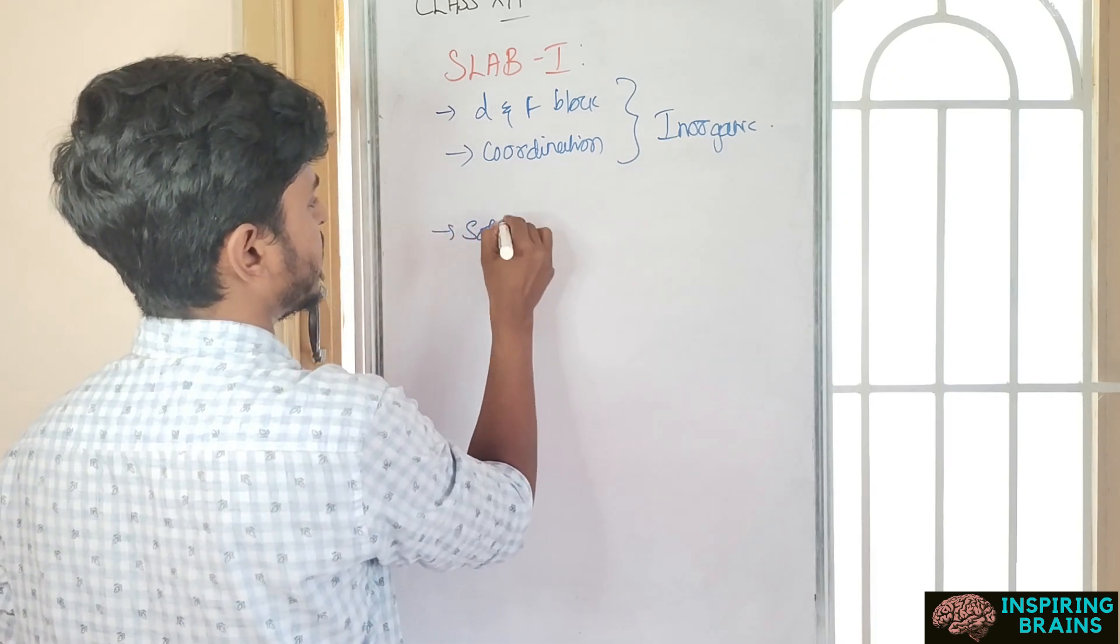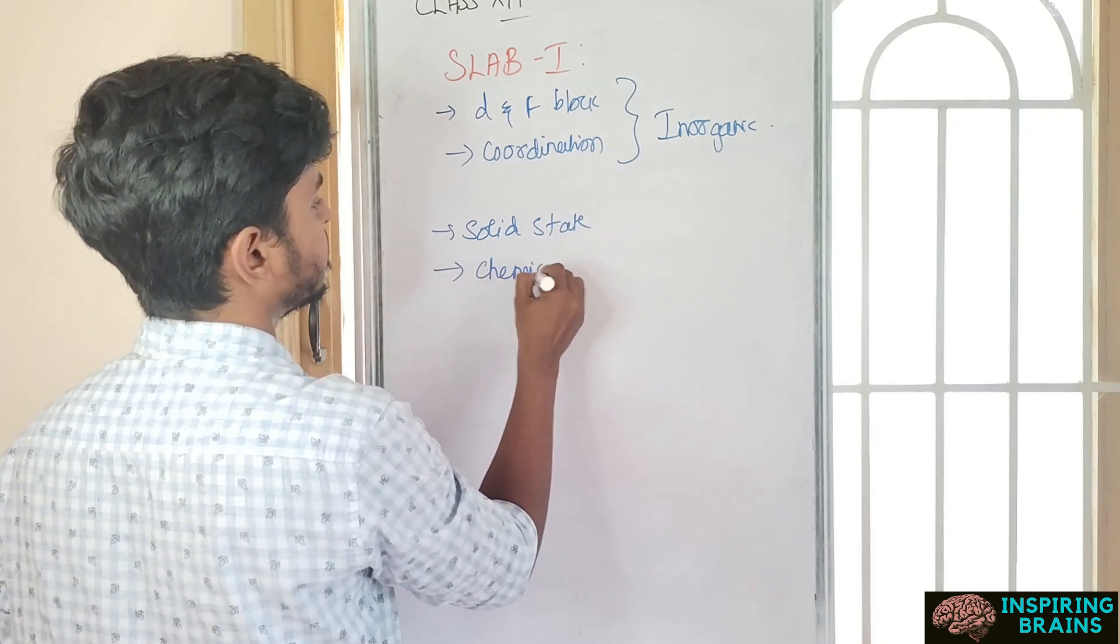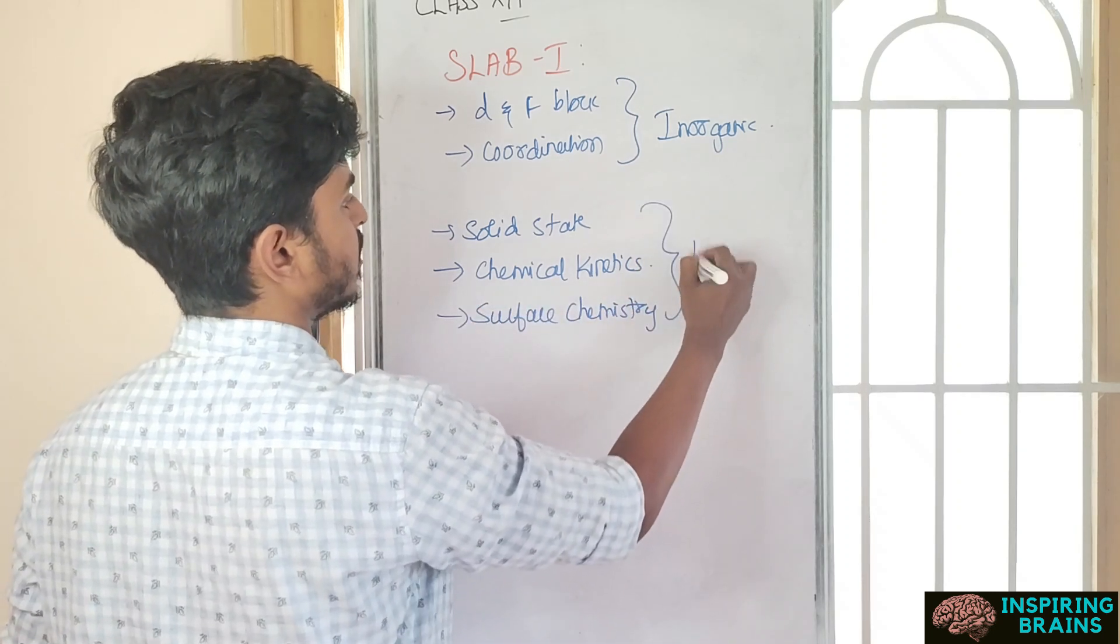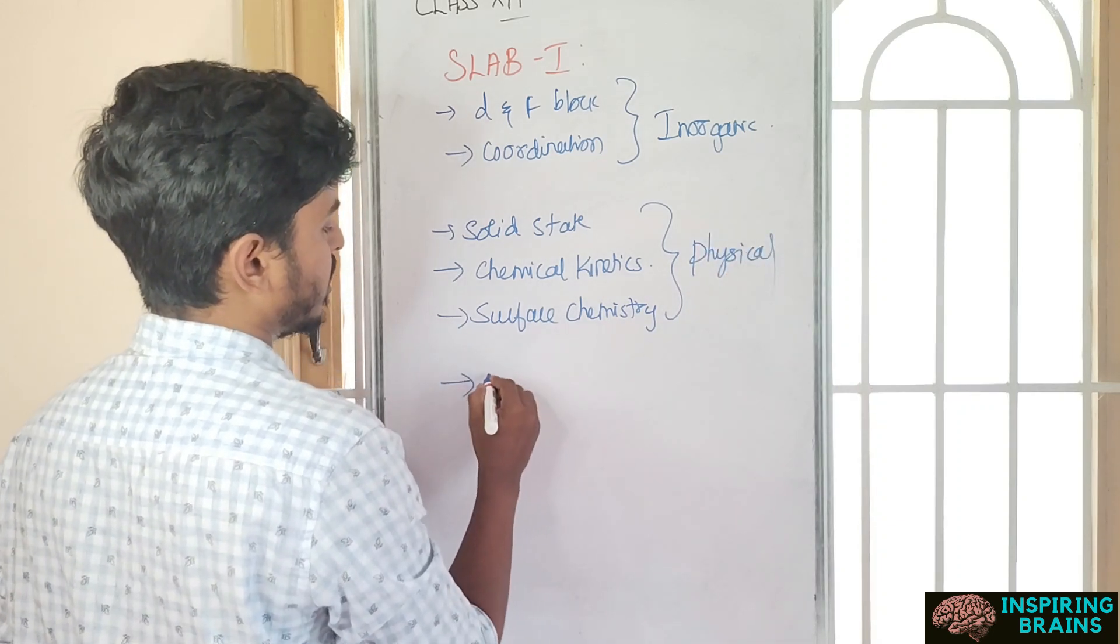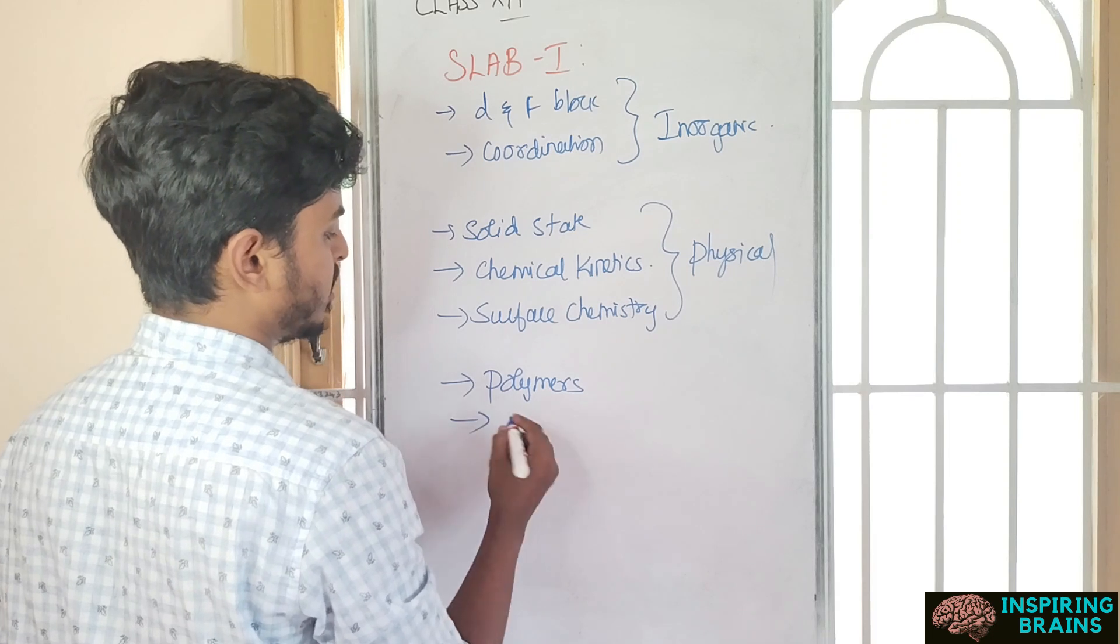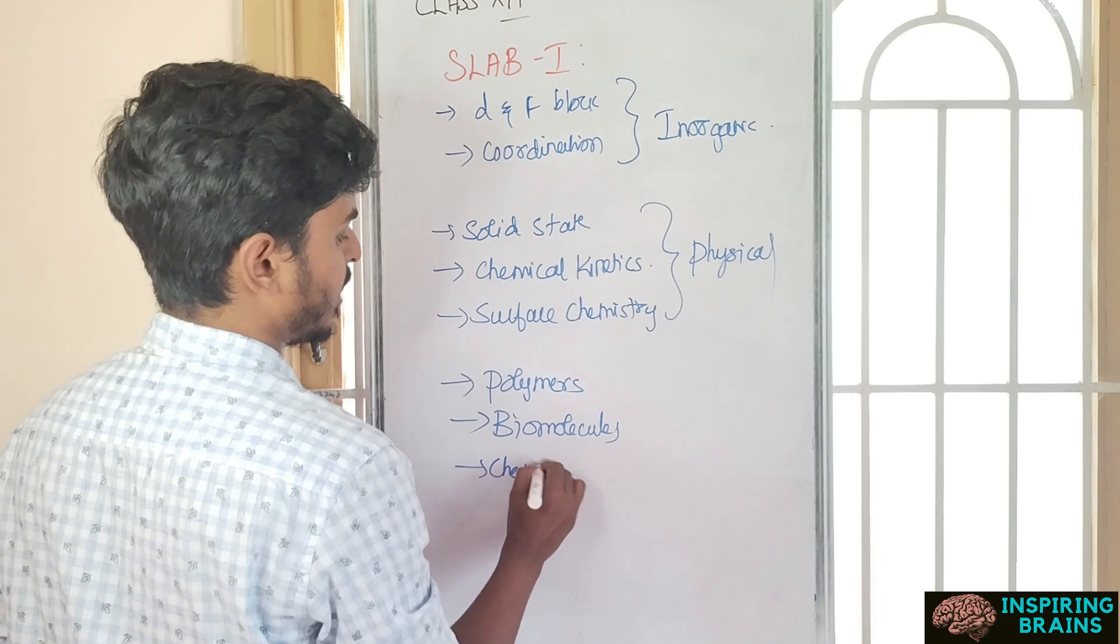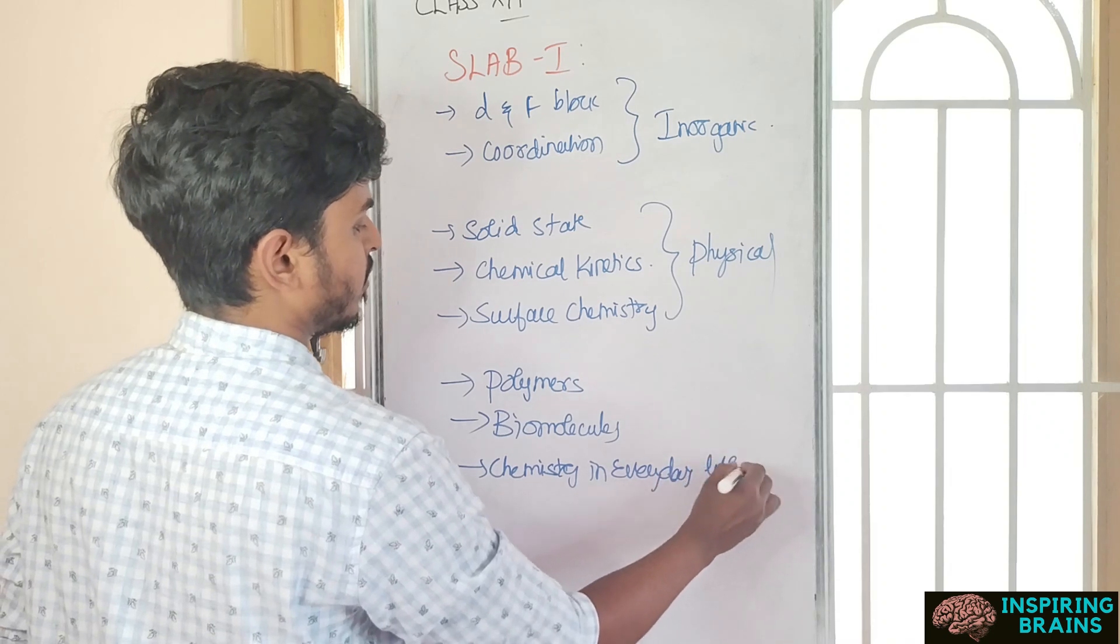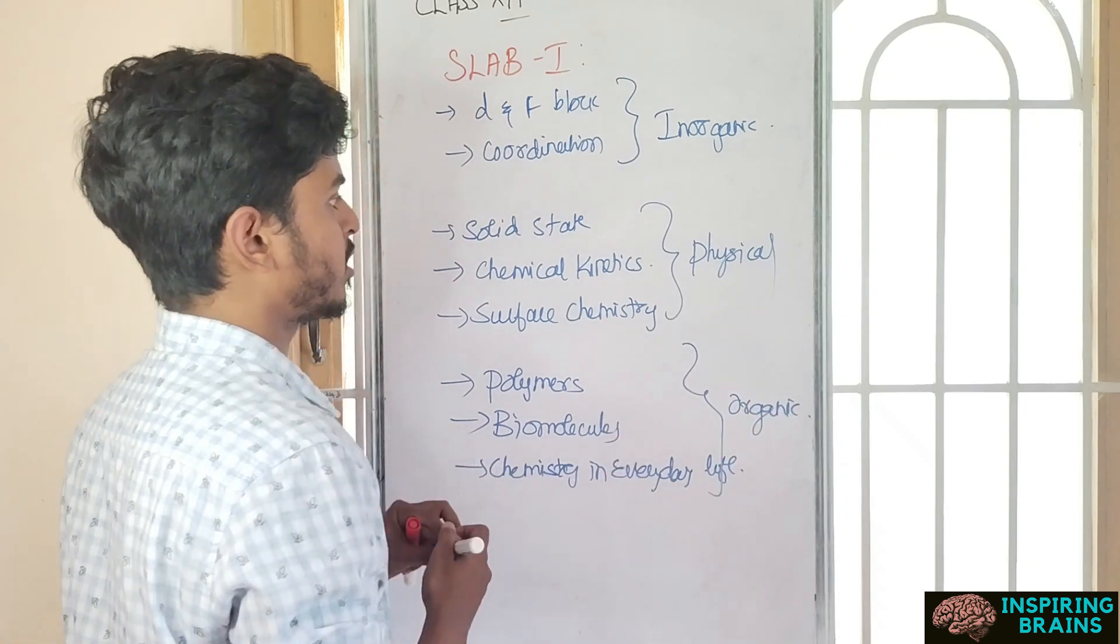Then chemical kinetics, then surface chemistry - you can cover in one shot. Finally go with organic, I'll tell you the easiest chapters of organic that you don't need any basics: polymers, then biomolecules, chemistry in everyday life. You can study in one shot, start at any point of time. These are all slab 1 chapters given very easily.